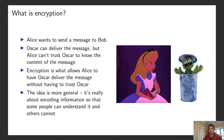Before I get into the concept of homomorphic encryption, I just briefly wanted to discuss the concept of encryption in general. Suppose that Alice wants to send a message to someone else named Bob, and a third party called Oscar can deliver the message, but Alice doesn't really trust Oscar to know the contents of the message. She wants him to deliver it, but she doesn't want him to know what the message says.